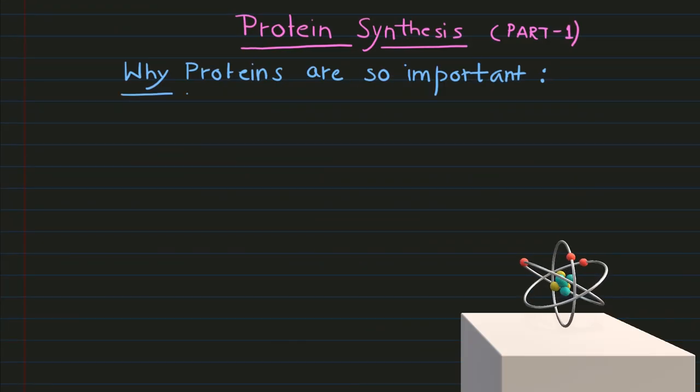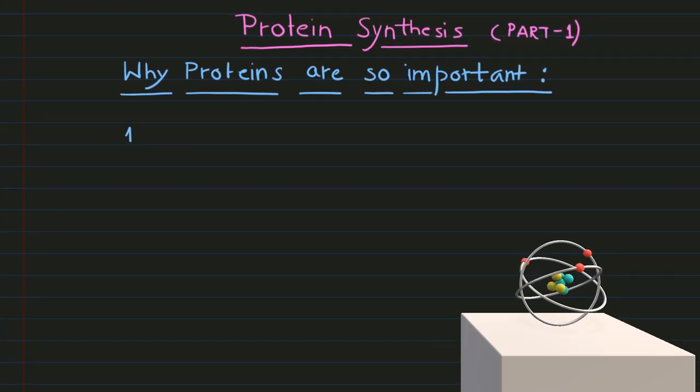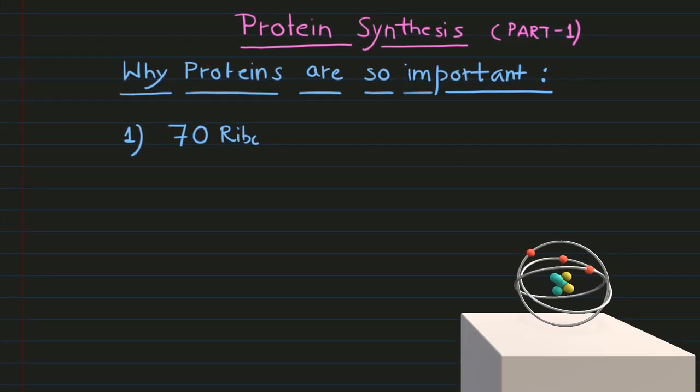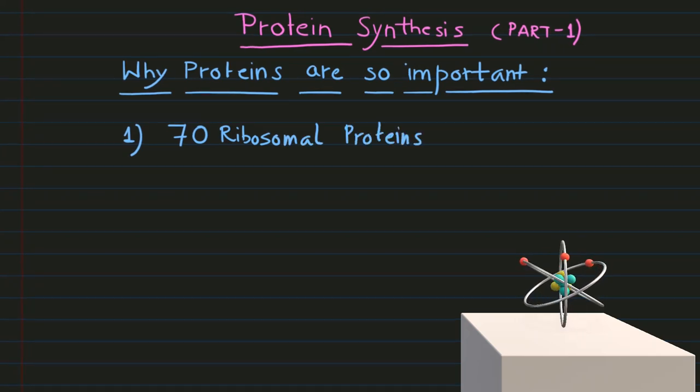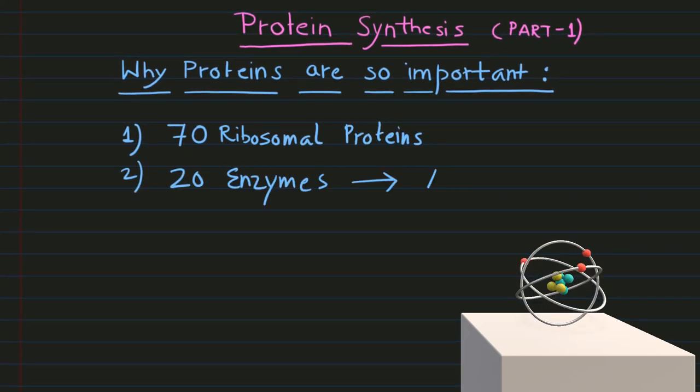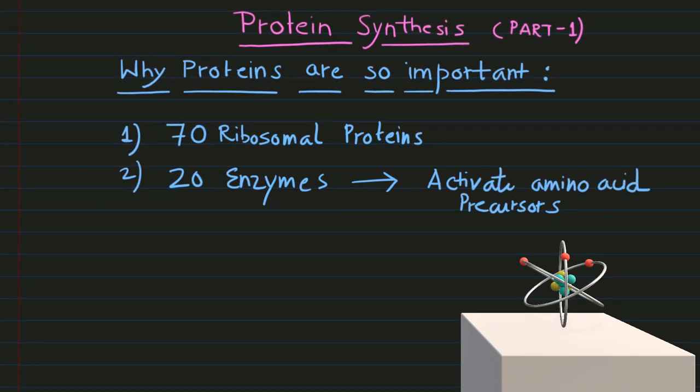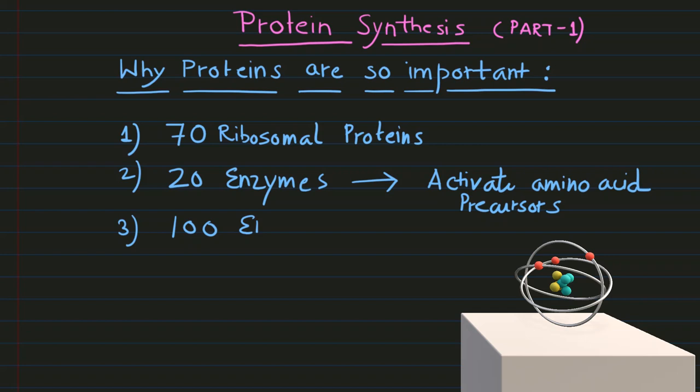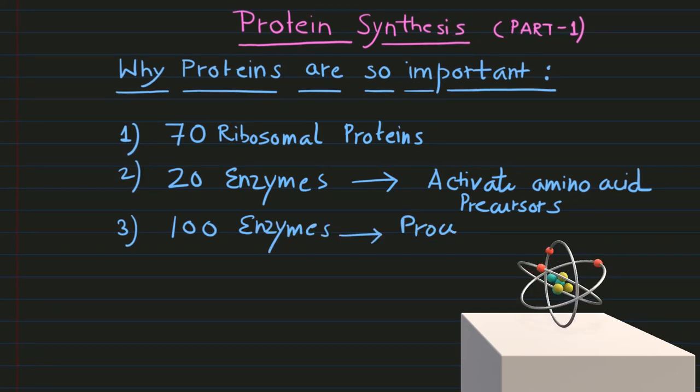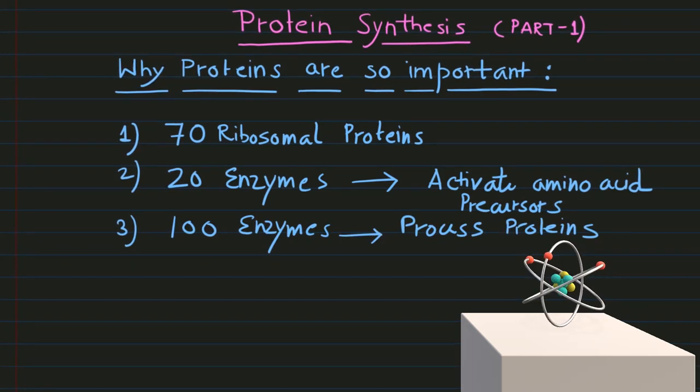To produce a polypeptide chain, we require 70 different ribosomal proteins. Additionally, we need 20 different enzymes to activate amino acid precursors. We need approximately 100 enzymes to process the protein after its manufacture.